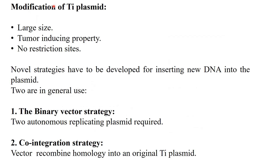Since the Ti plasmid is a large DNA of 180 to 250 KB, it induces tumour and crown gall disease, and it has no suitable restriction sites. Because of these limitations, we have to modify the Ti plasmid. There are different strategies that can be used, and two important ones are in use.